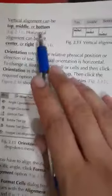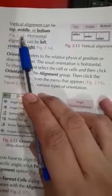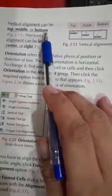Now, there are two types of alignments: vertical and horizontal. Vertical alignment can be top, middle, or bottom.